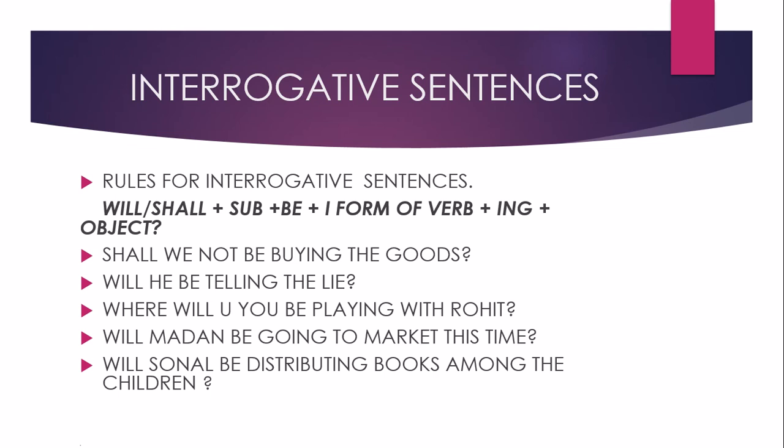क्या हम सामान नहीं खरीद रहे होंगे? Will he be telling the lie — क्या वे झूट बोल रहा होगा? Where will you be playing with Rohit — तुम Rohit के साथ कहां खेल रहे होंगे? अब देखिए, 'where' आया है, जो एक question word है — कहां। तो जब sentence में 'कहां' word आया, तो उस कहां का जो meaning है, 'where', उसको हमने सबसे starting में रख दिया।